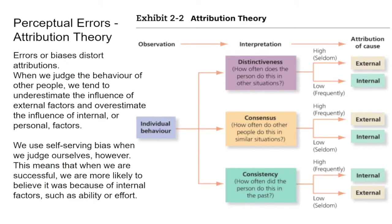Errors or biases distort attributions. When we judge the behavior of other people, we tend to underestimate the influence of external factors and overestimate the influence of internal or personal factors. So we might say the person is just a sunny person when actually something outside caused it. We often bring what's called a self-serving bias when we judge ourselves — when we are successful, we're more likely to believe it's because of us rather than the work of someone else.